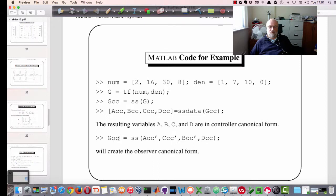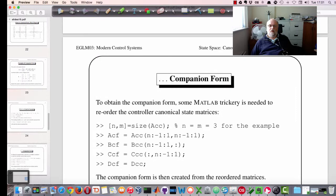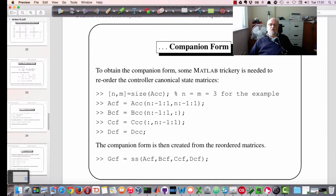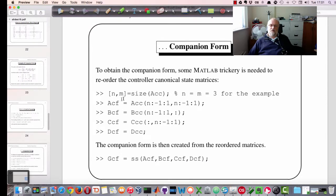If we want the observer canonical form, we take the transpose of the A, C and B matrices and create another state-space model from that. And that will give us the observer canonical form. The companion form is slightly trickier. We need to basically take the A matrix, reorder the states, so we change the index essentially by doing these operations in MATLAB. And then that gives us the companion form.